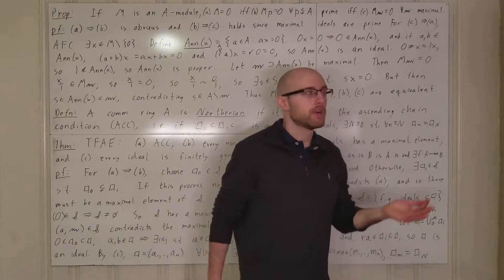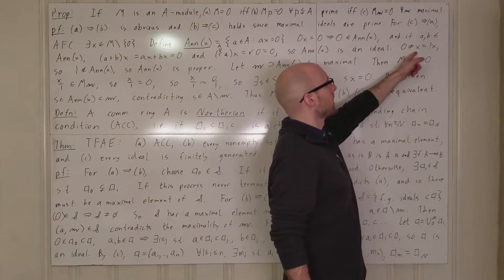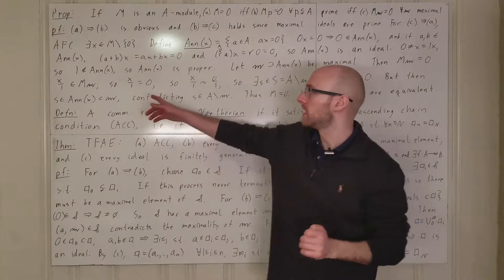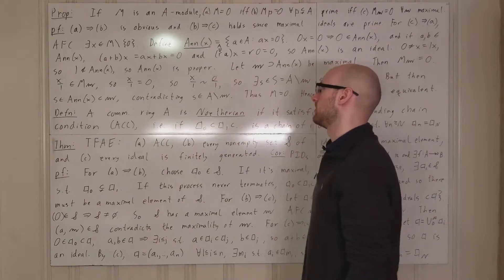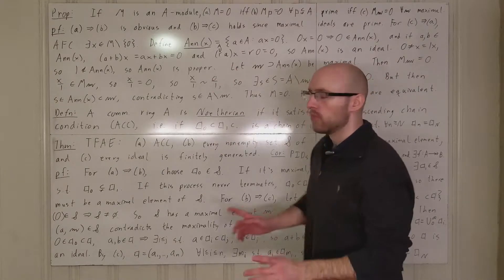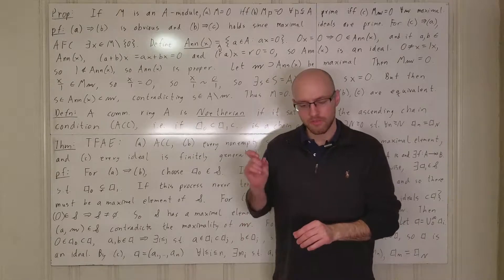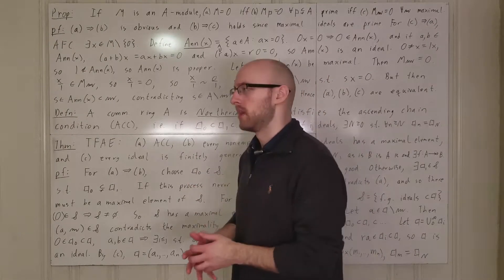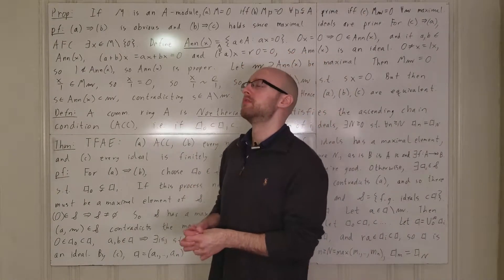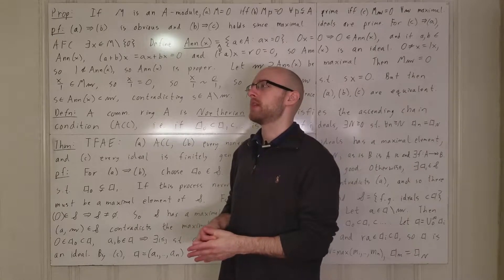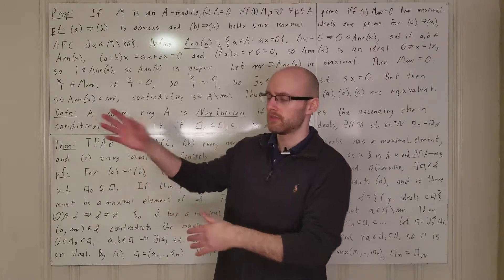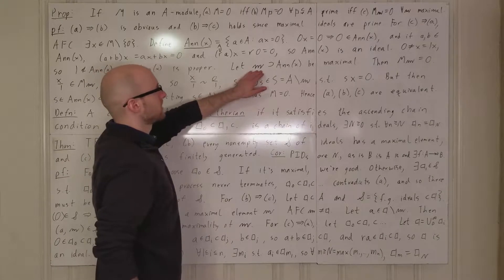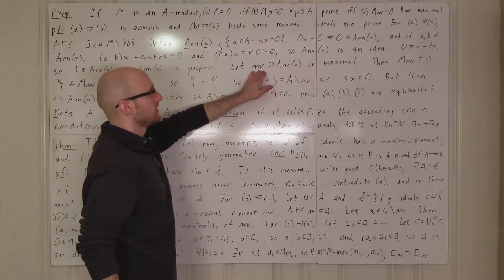The annihilator is also a proper ideal because x is nonzero and 1 does not annihilate x, so 1 is not in the annihilator. Therefore the annihilator is a proper ideal. We proved that given any proper ideal, there is a maximal ideal which contains it — this was a corollary of the existence of maximal ideals via a Zorn's Lemma argument. So let M be a maximal ideal containing the annihilator.